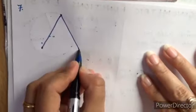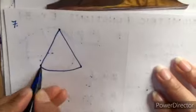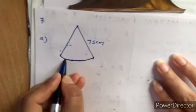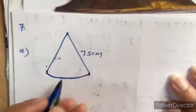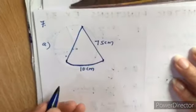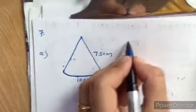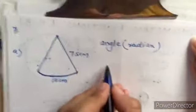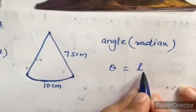Question number seven has three parts. It involves a pendulum swinging in both directions. In part A, the radius (pendulum length) given is 75 cm. The length of arc is 10 cm. We have to find the angle in radians. We use theta equals L upon R.